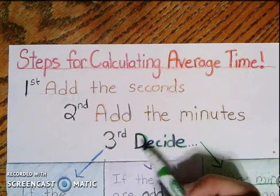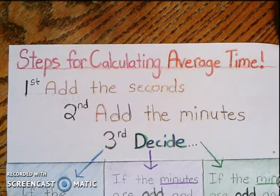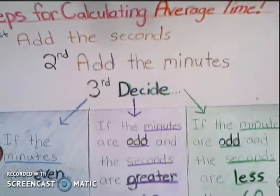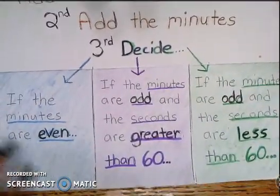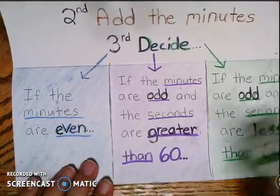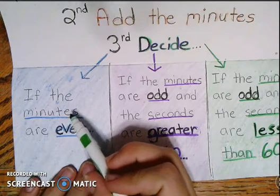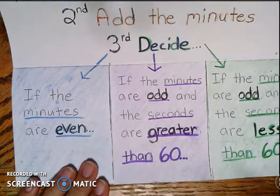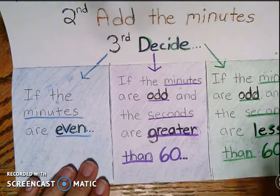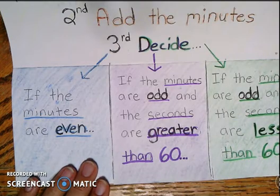And then our third step is where it gets a little bit tricky. So we've got a decision to make here when we get to the third step. So we're going to look first at the minutes. And then after we look at the minutes, we might have to look at the seconds to figure out what we're going to do next after we've added the seconds and the minutes.